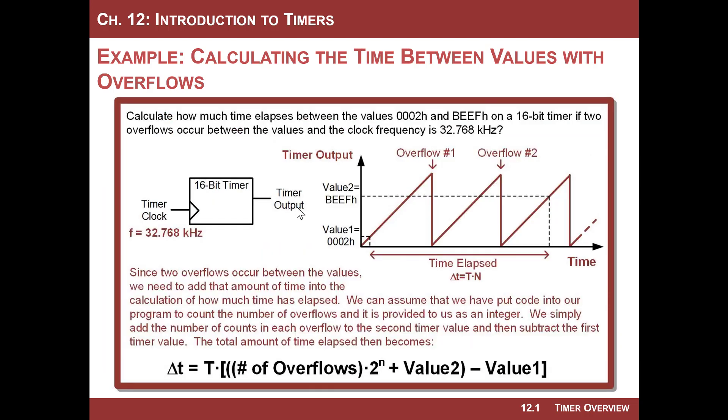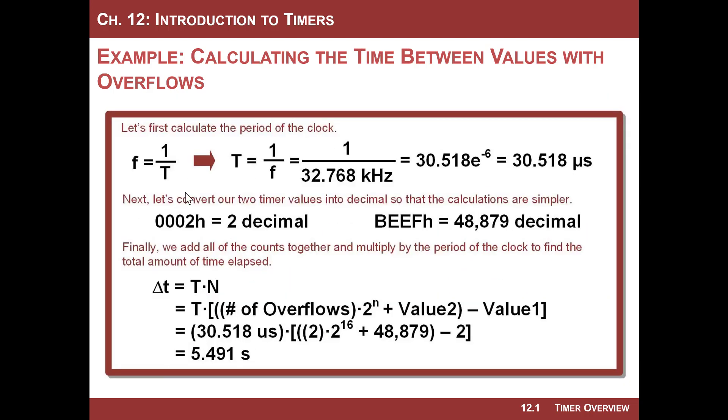Once again, let's do that example. Clock frequency in this is 32kHz. We're going to do one over 32kHz. The period happens to be 30 microseconds. And then let's start by converting our decimal or our hex values to decimal. So 0002h is 2 decimal. BEEFh is 48,879 decimal.